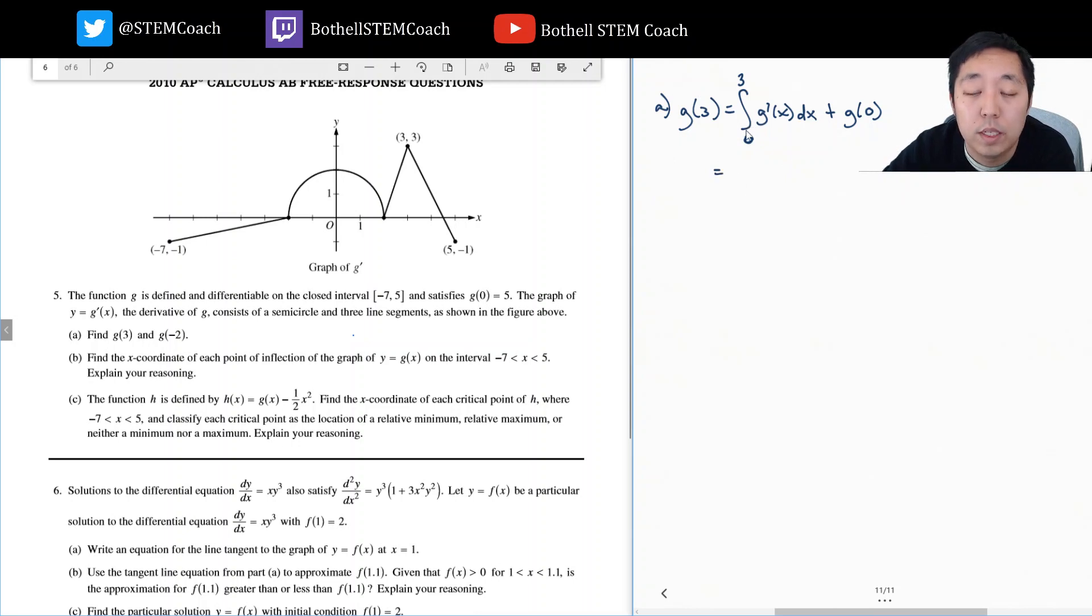So the integral from zero to three is this area here. I need to compute that area. This area is a quarter of a circle with radius two, so it's one-fourth times pi times two squared. This is one-fourth the area of a circle plus the area of this triangle. This height is three and the width of this triangle is one, so one times three divided by two is three halves.